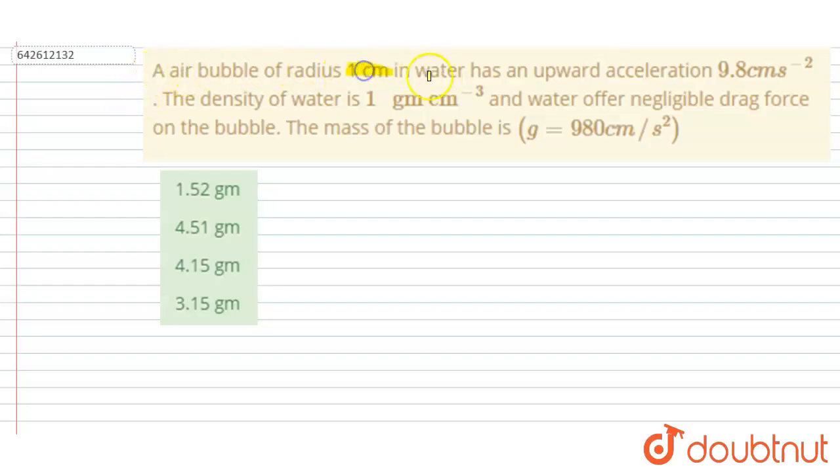Hello everyone. An air bubble of radius 1 cm in water has an upward acceleration of 9.8 cm/s². The density of water is 1 g/cm³ and water offers negligible drag force on the bubble. You have to find out the mass of the bubble.